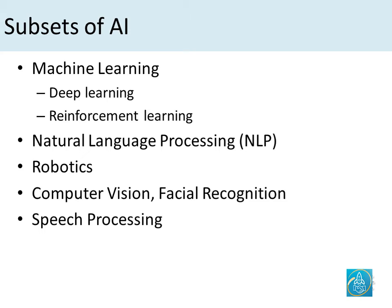Then we have natural language processing. For machines to be able to act like humans, they should be able to understand not just the binary language of zeros and ones, but they should be able to understand how humans speak. So NLP is a key subset within AI. Then we have other fields like robotics, computer vision, and speech processing.